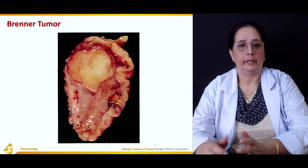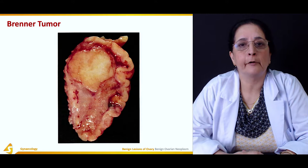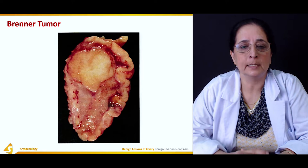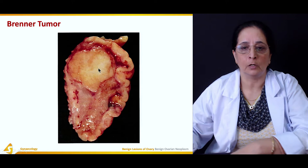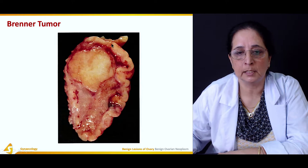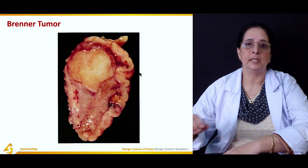The slide shown demonstrates the Brenner tumor. Brenner tumor is a subtype of surface epithelial stromal tumor and also develops from the epithelium of the ovary. The actual specimen of the Brenner tumor is shown, confirming its classification as a subtype of surface epithelial stromal tumor.